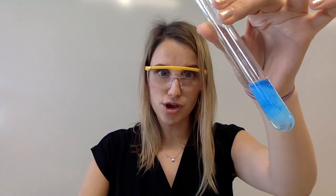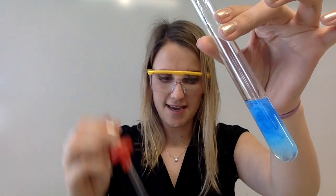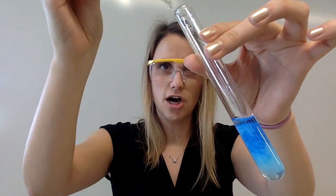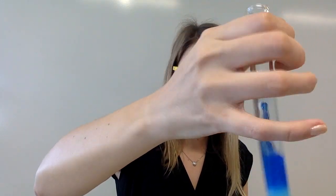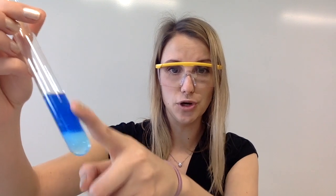Hopefully what you should be seeing is that it's forming a dark blue solution. So whilst you get that light blue precipitate originally, the more that you add, if you add the ammonia in excess, it turns into this dark blue solution.